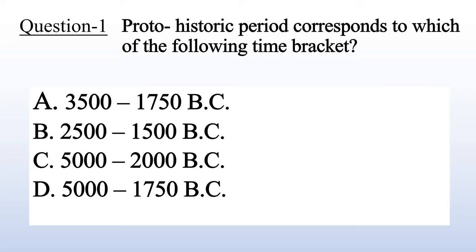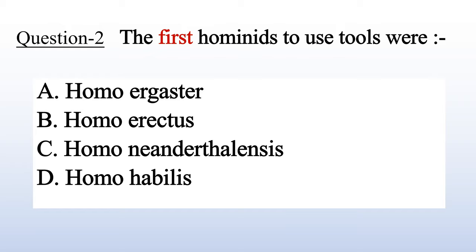Question 5: Proto-historic period corresponds to which of the following time brackets? A. 3500 to 1750 BC, B. 2500 to 1500 BC, C. 5000 to 2000 BC, D. 5000 to 1750 BC. Answer is A: 3500 to 1750 BC.